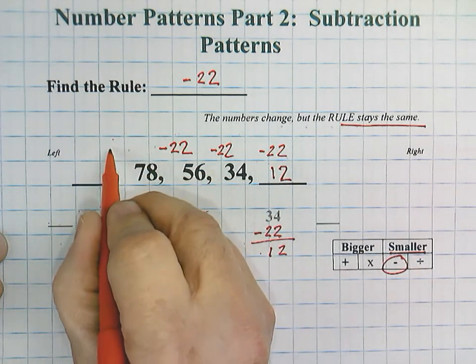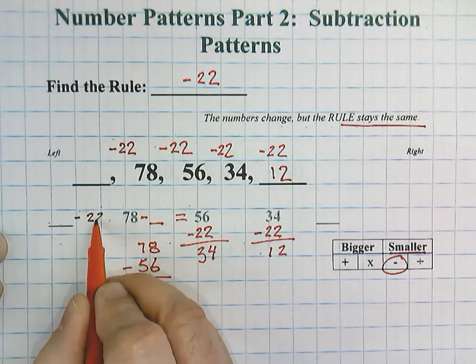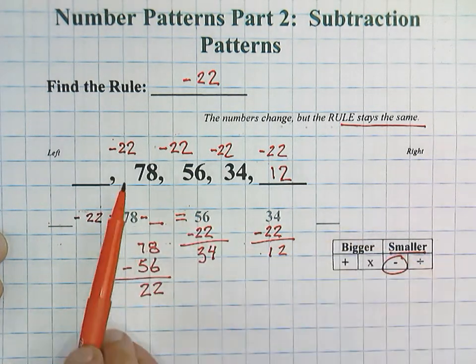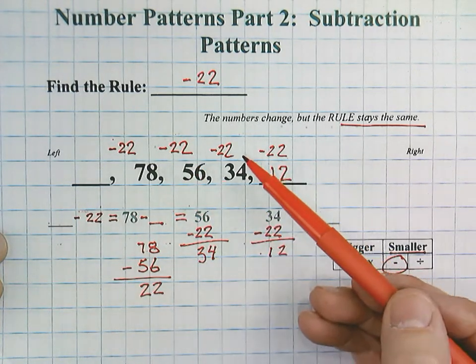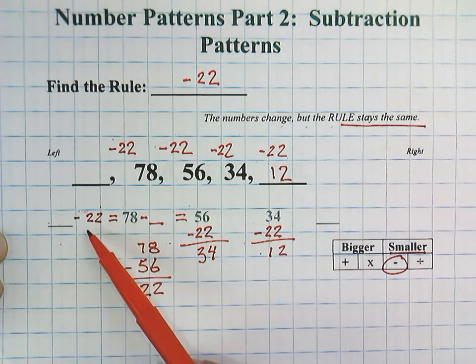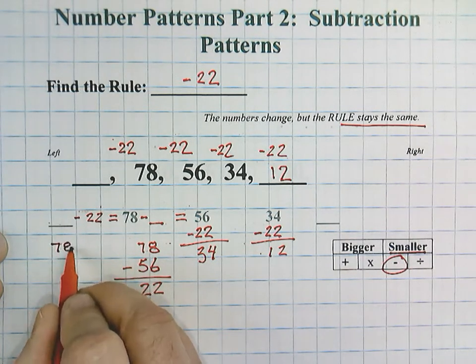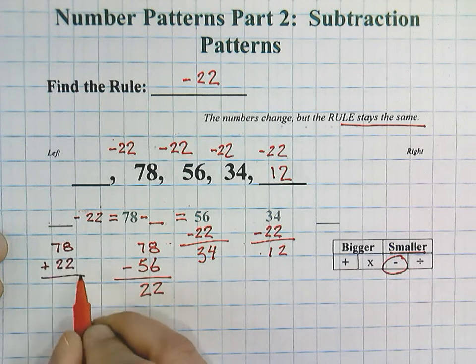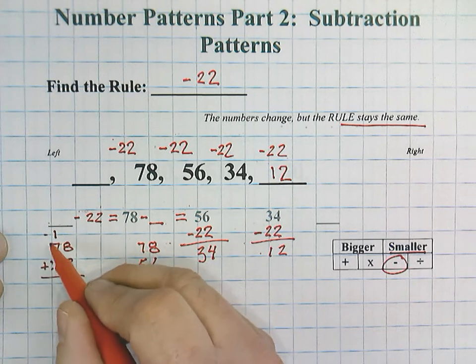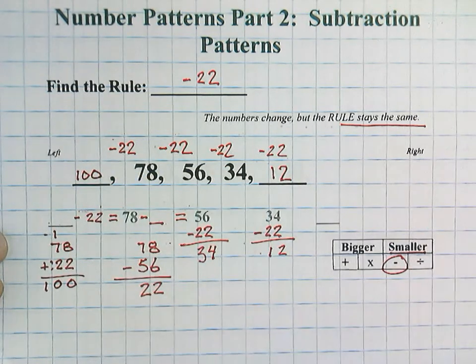Remember, the rule stays the same. We could express that as blank minus 22 equals 78. But remember, this time we're not working from left to right. This time we're working from right to left. In other words, we're doing the opposite. Well, the opposite of subtraction would be addition. So, instead of subtracting, we're going to add 78 plus 22. 8 plus 2 is 10. I'm going to regroup my 1. 7, 8, 9, 10. And that would be equal to 100.